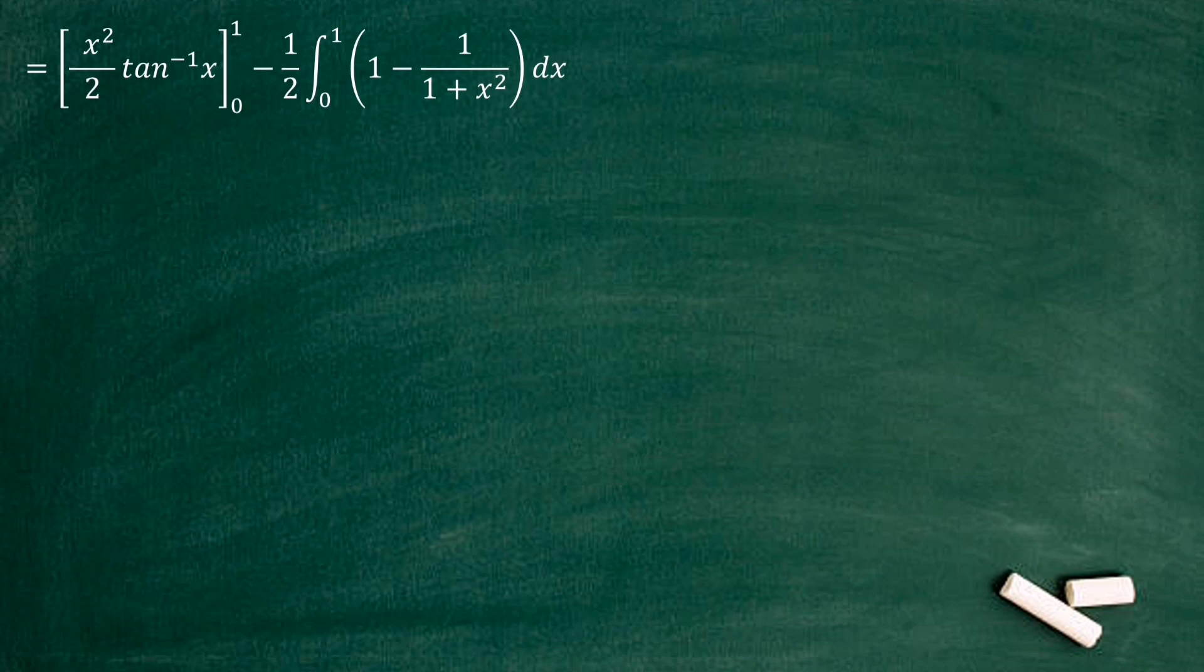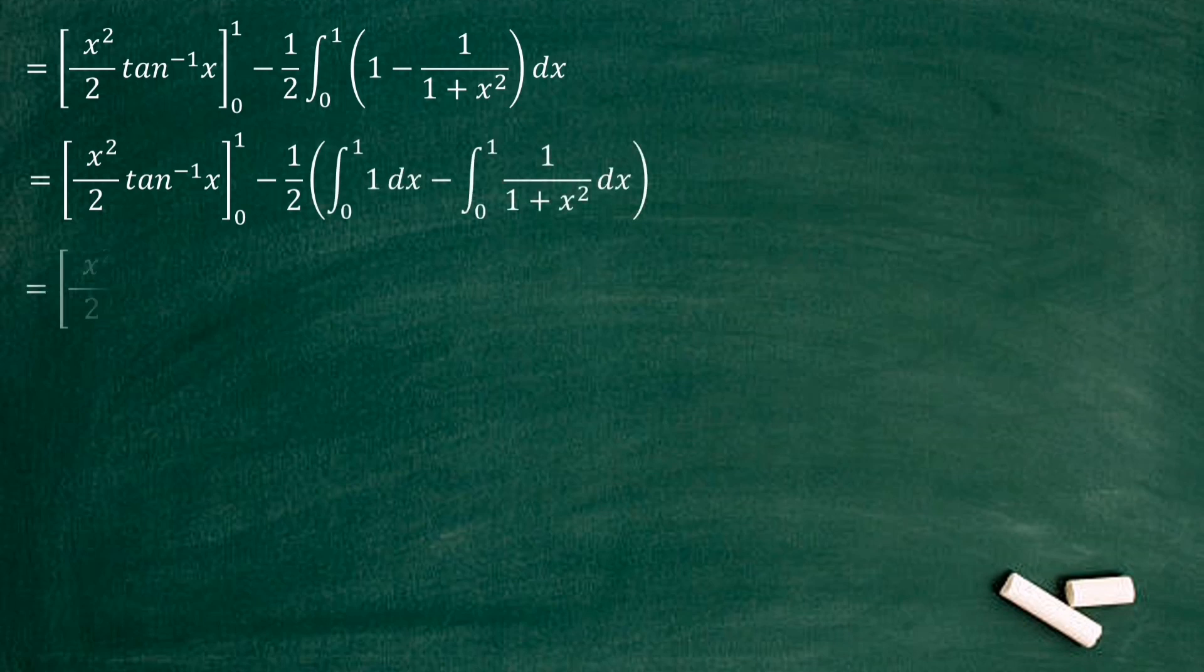Now we can consider the integral sign separately. First one integral 1, second one integral 1 over 1 plus x squared. Integral 1 value equals x. Integral 1 over 1 plus x squared value we can write as tan inverse x.